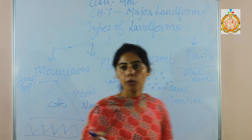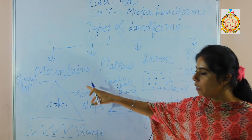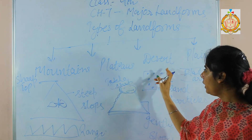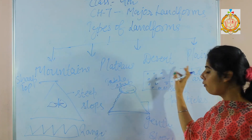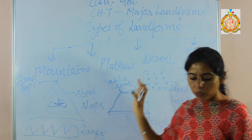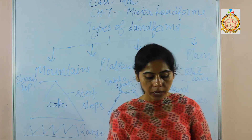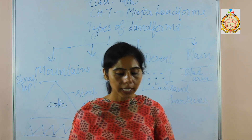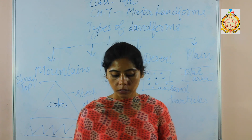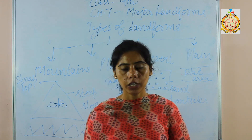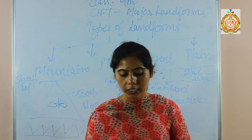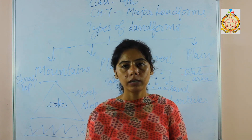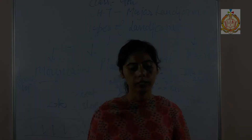So there are four kinds of landforms: first, mountains; second, plateaus; third, deserts; and fourth, plains. In this chapter, we have studied about the types of major landforms. Pictures are given in your book — you can see and observe the different kinds of landforms. Thanks and have a nice day.